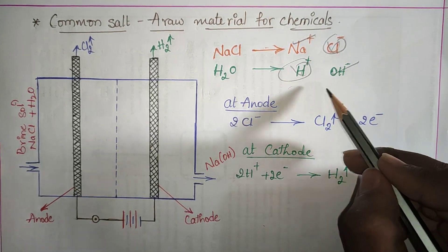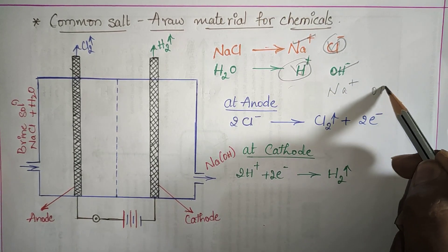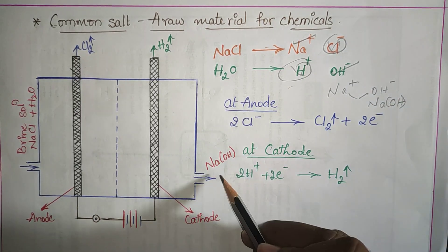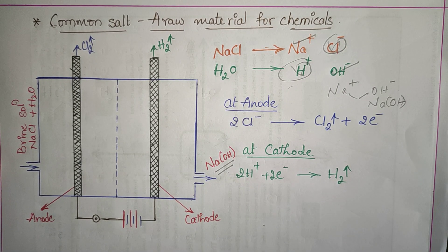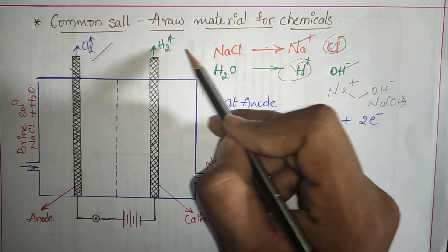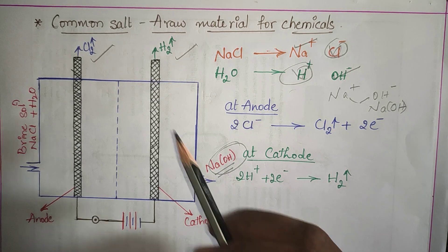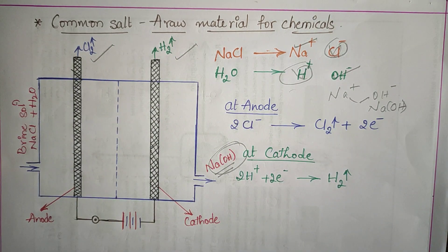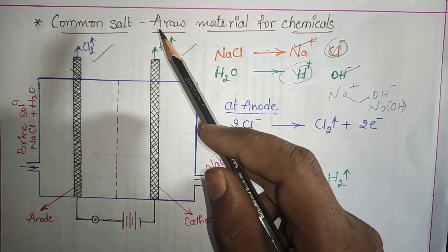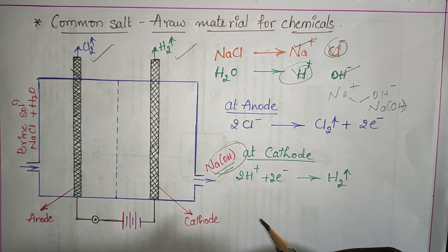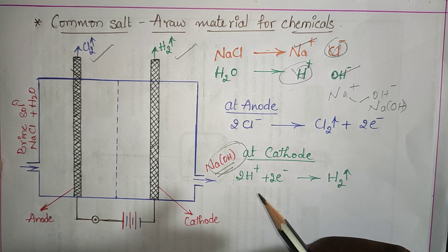The remaining sodium ions and hydroxide ions mix together to form sodium hydroxide. So this process produces three things: chlorine gas, hydrogen gas, and sodium hydroxide. All of these are used as raw materials for further chemicals. This process is also known as the chloralkali process.